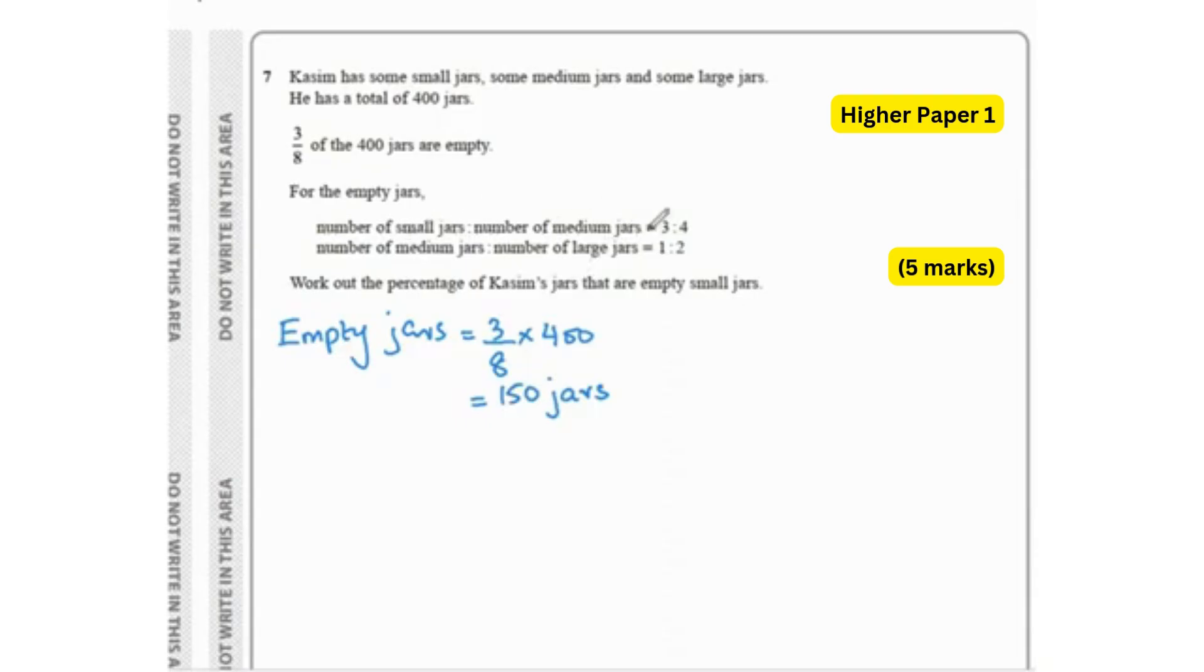Now, small jars to medium jars is 3 to 4, so small to medium is 3 is to 4. And medium to large is 1 is to 2. What we can do is we can combine as a single ratio with small, medium and large. But to do that, we need to make medium the same in both the ratios. So what we can do is in the second ratio, we can times it by 4. So now we have 4 is to 8. So small to medium to large becomes 3 is to 4 is to 8.